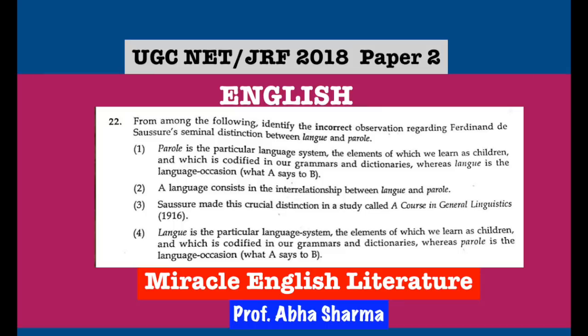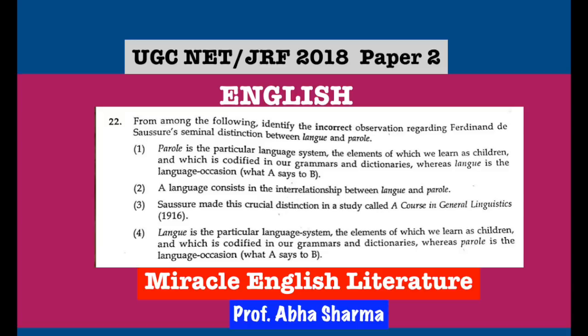Question number 22: Identify the incorrect observation regarding Ferdinand de Saussure's seminal distinction between langue and parole. The correct answer is the first choice — the statement that parole is the particular language system whose elements we learn as children and which is codified in our grammars and dictionaries, whereas langue is the language in use, is incorrect. All details of language and linguistics, including Saussure's langue and parole, can be found in linguistics and critical theory videos.